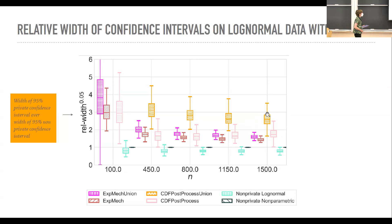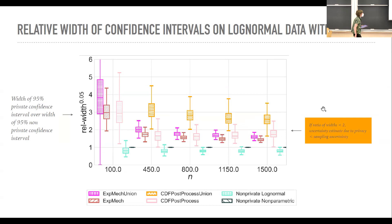And you can also see that just the union bound method does a lot worse than the other methods. So here's the union bound CDF version. Here's the non union bound CDF. There's the union bound version of exponential mechanism. Here's the non union bound. Another way of interpreting this is you can think about the relative width. So here's relative width being two. That ratio being two. And so what that means is that if that ratio is less than two, it means that your uncertainty estimate due to privacy, that added uncertainty is about the same as the underlying added uncertainty due to sampling.